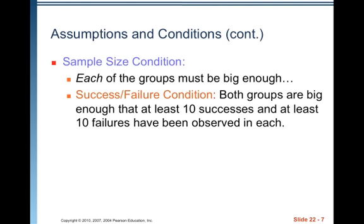Sample size condition. Each of the groups must be big enough. We must expect at least 10 successes and at least 10 failures if we're doing a hypothesis test. If we're doing an interval, then what we want is to observe at least 10 successes and at least 10 failures.